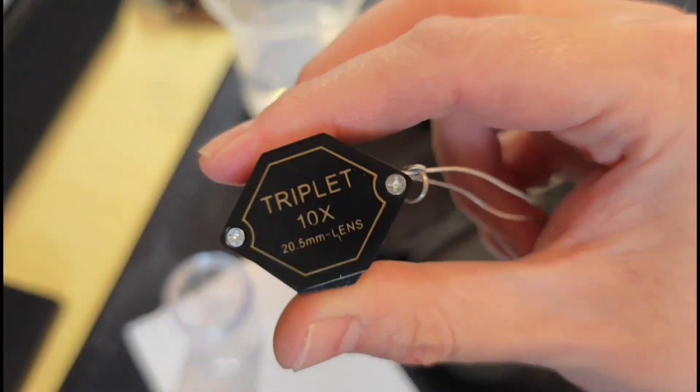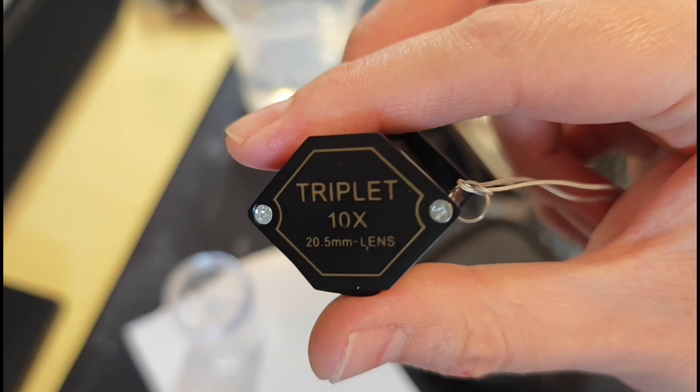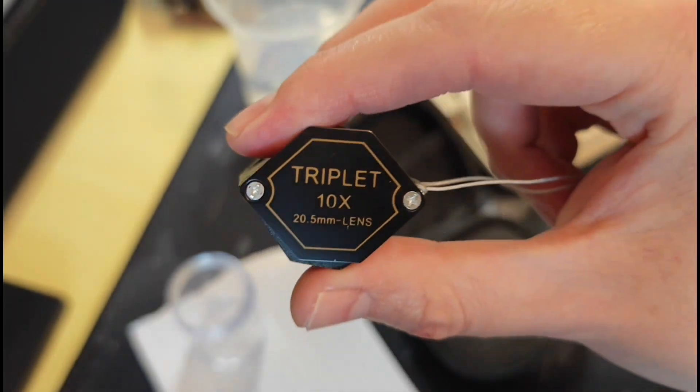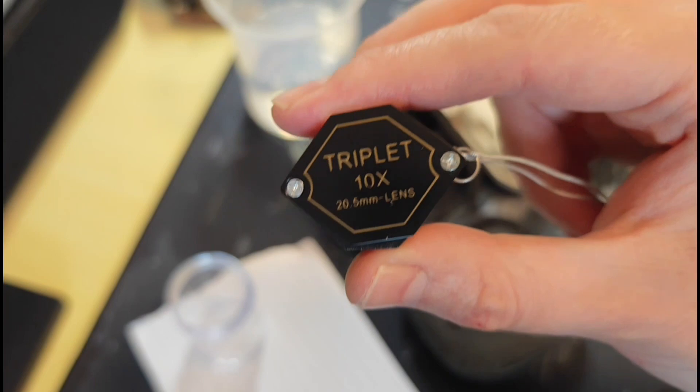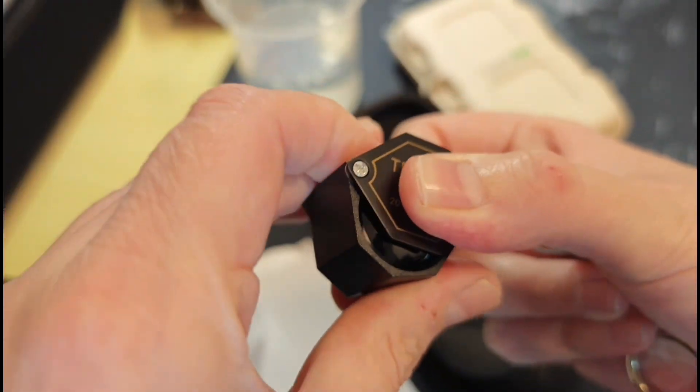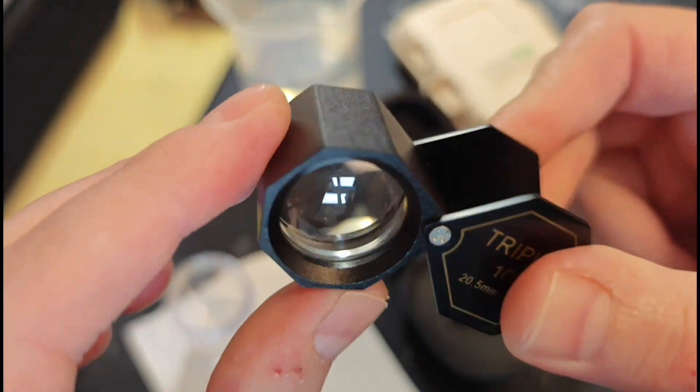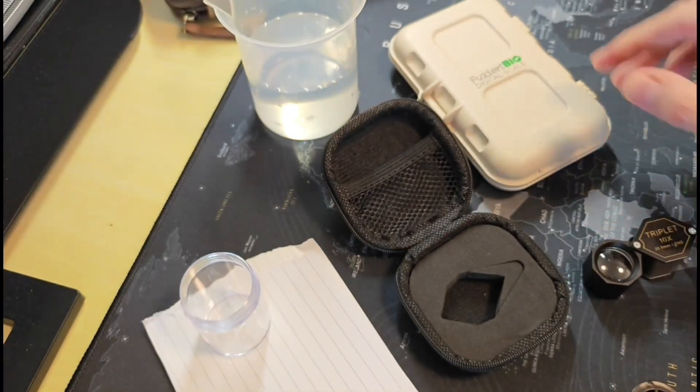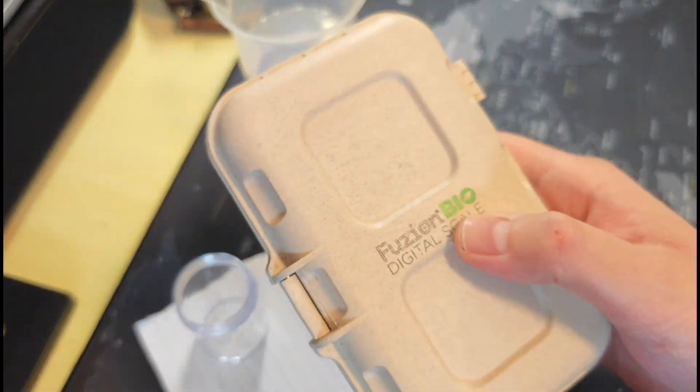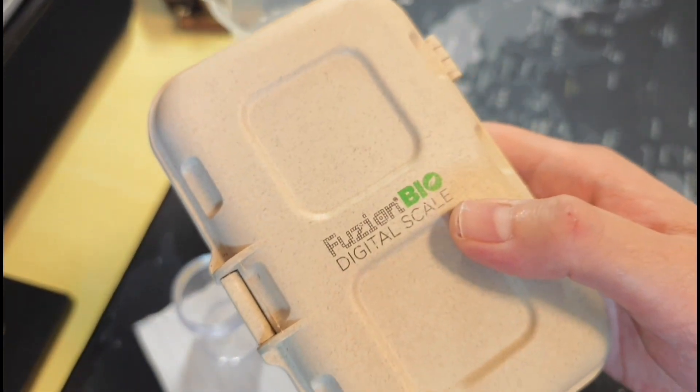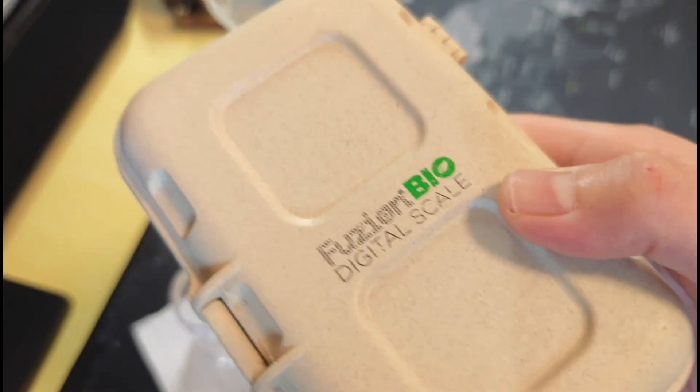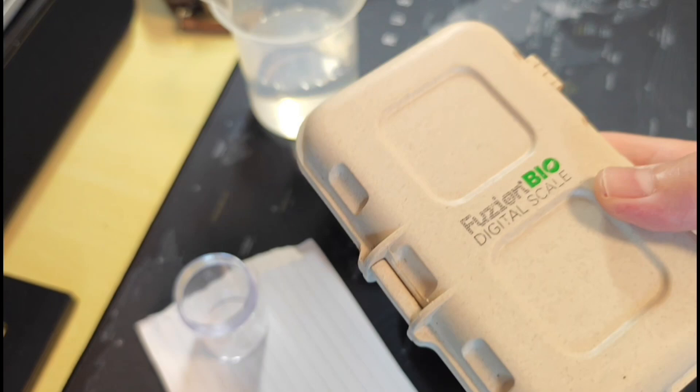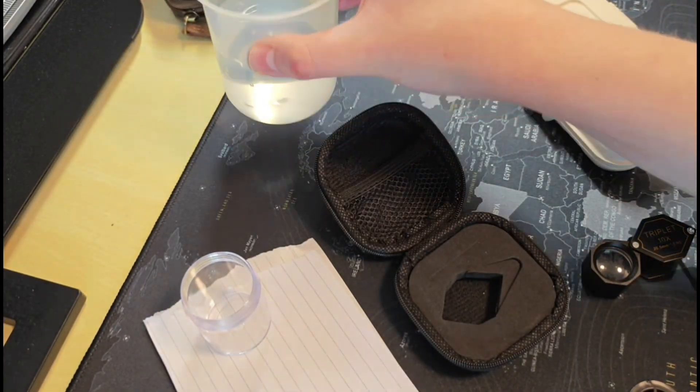You need a 10x loupe, a jeweler's loupe. You can get these very cheap on eBay or AliExpress. For a nice quality like this one, it's something like 20 euros on Amazon. You need a scale that is capable of weighing in grams. You need a nice scale that can go up to three digits behind a gram, this is extremely important. And lastly, you just need some water.